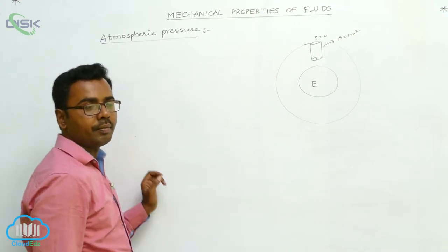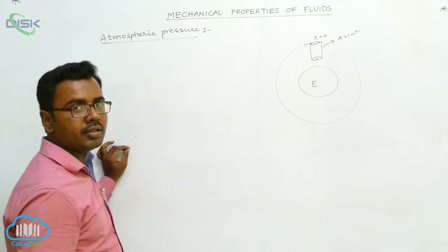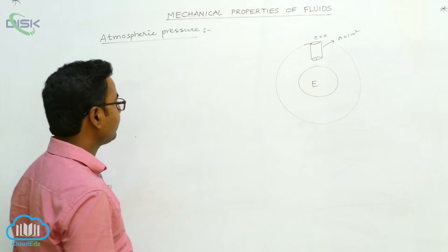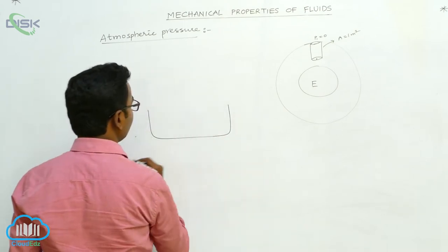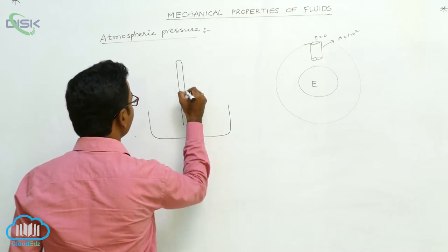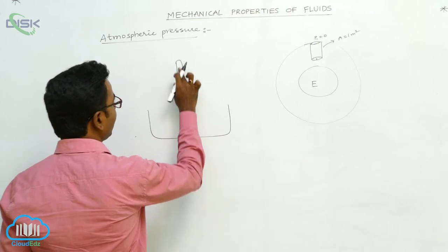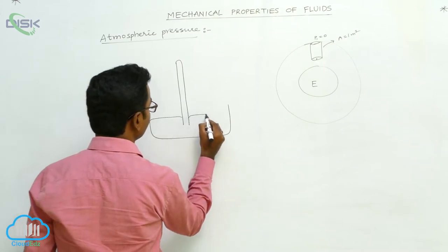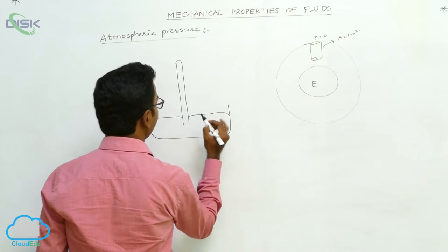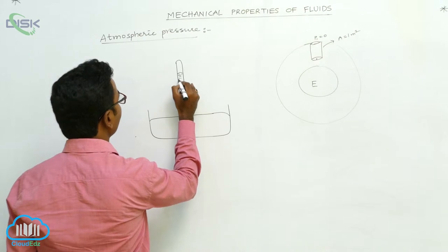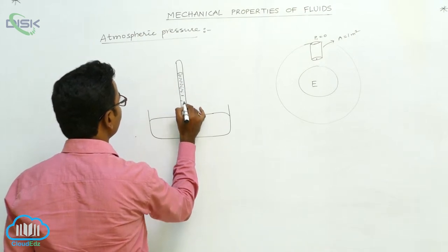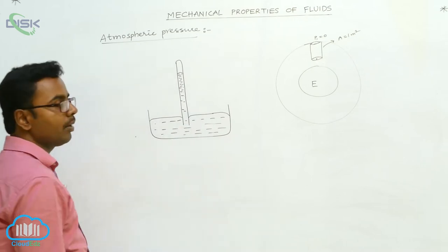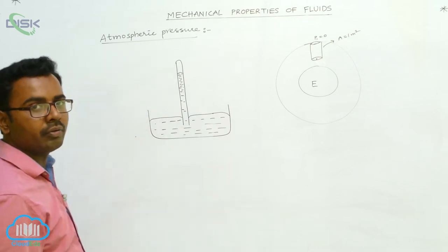The mercury barometer contains a cylindrical glass tube which is closed at one end and filled with mercury, and this is inverted into a mercury trough. The trough contains mercury, into which we invert the glass tube that is open at one end and closed at the other. The liquid level may fall down to a particular height. This is the construction of the mercury barometer.